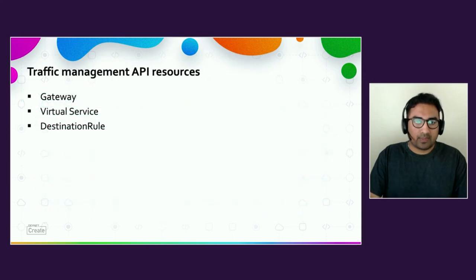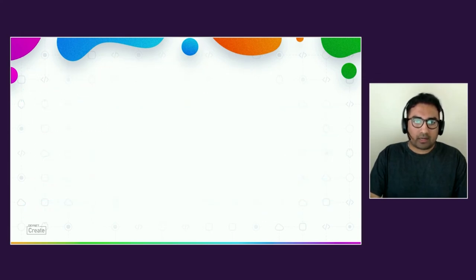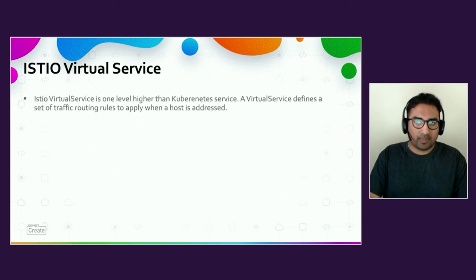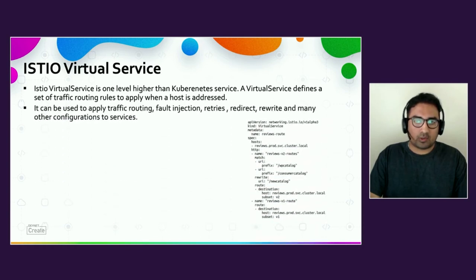Now let's look into some traffic management resources. Gateways are primarily used to manage ingress traffic, but we can also configure egress gateways. Istio provides pre-configured gateway proxy deployments like the Istio ingress gateway and Istio egress gateway. These gateway configurations let traffic from the outside world into the mesh, but don't specify routing. For that, we need to define a Virtual Service, which is one level higher than a Kubernetes service and defines a set of routing rules to apply when a host is addressed. Each routing rule defines matching criteria for specific traffic of a specific protocol, and you can also configure traffic routing, fault injection, retries, redirects, and rewrites.